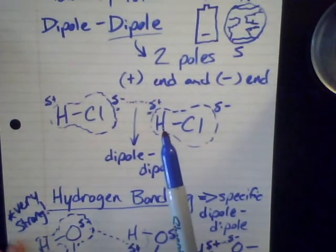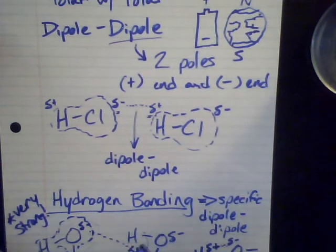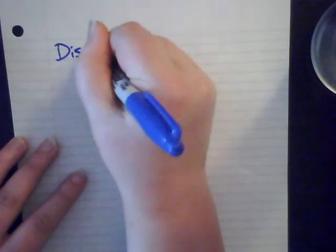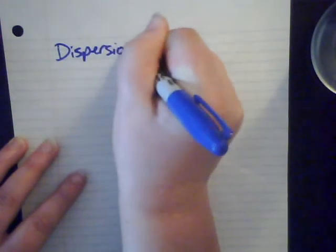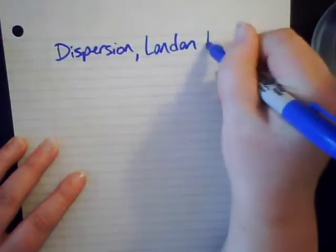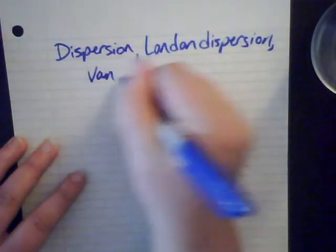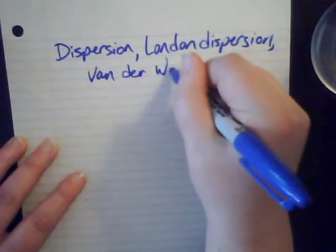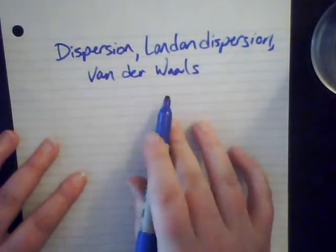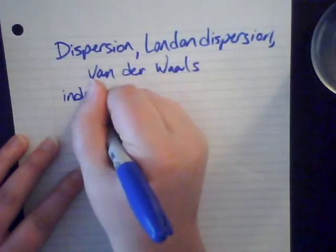Dipole-dipole forces are somewhere in the middle in terms of strength. Hydrogen bonding is stronger than just dipole-dipole on its own. The weakest of the intermolecular forces, or IMFs, are called dispersion forces, or London dispersion forces, or van der Waals forces. Your book talks about them as induced dipoles.